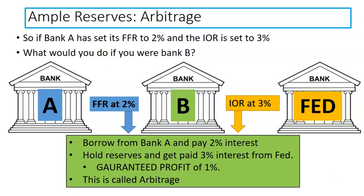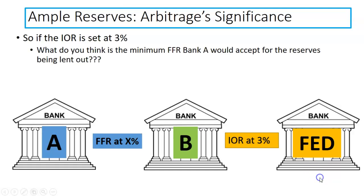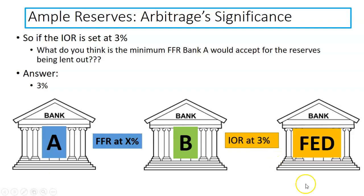Bank B just pockets 1% — this is the idea of arbitrage. So with this in mind, if the interest on reserves is set at 3% by the Federal Reserve, what is the minimum federal funds rate that Bank A would accept for reserves being lent out? About 3%, probably a little above — because why would they lend at 3% to Bank B instead of just gaining 3% straight from the Fed? For our purposes, we're going to use a general policy rate, and it's going to serve as the combined reference for the federal funds rate and interest on reserves for College Board.